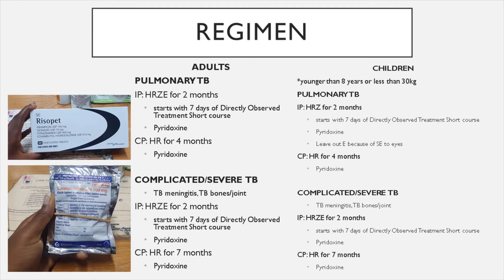If you are in a community area, community health workers come to check on you instead of you going to the clinic every day. For pulmonary TB, the regimen is H-R-Z-E: isoniazid (H), rifampicin (R), pyrazinamide (Z), and ethambutol (E) — all four for two months, starting with seven to ten days of DOTS, plus pyridoxin to avoid peripheral neuropathy. After two months a smear is done; if negative, you continue on isoniazid and rifampicin for four months — the continuation phase — plus pyridoxin.